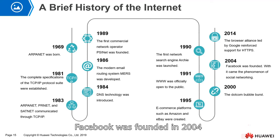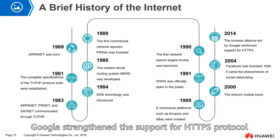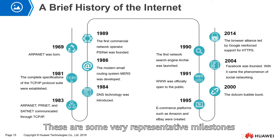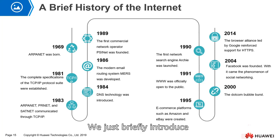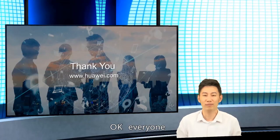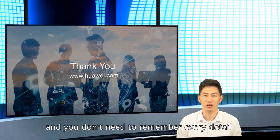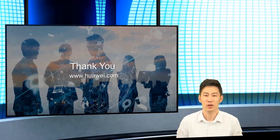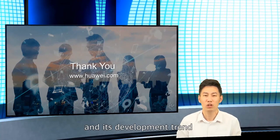Facebook was founded in 2004, a year often referred to as the first year of social networking. Then in 2014, Google extended its support for the HTTPS protocol. These are some very representative milestones in the history of internet development. We just briefly introduced the parts related to cloud computing. This brief history of the internet will help you understand what cloud computing is and its development trend.